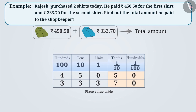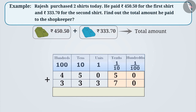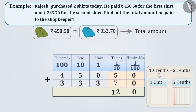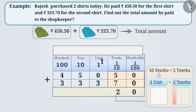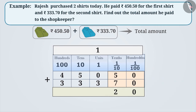For the operation of addition, we must draw a line below the second number and write the sum. To add the numbers, we must first move from right to left. 0 plus 0 is equal to 0. 5 plus 7 is equal to 12. A group of 1 unit can be formed from 12 tenths, which can be added in the units place. The remaining 2 will be written in the tenths place.